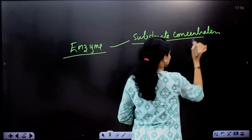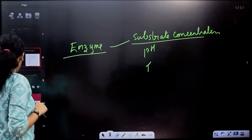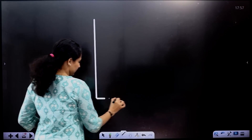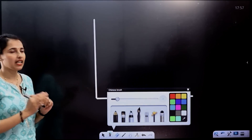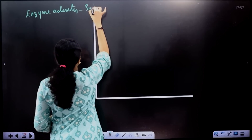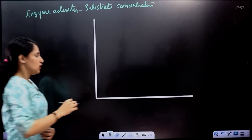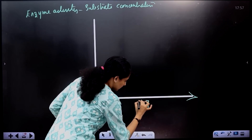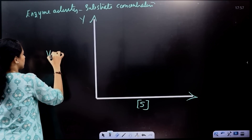We are going to look at how substrate concentration influences enzyme activity. To understand this, we plot a graph. On the x-axis, we take substrate concentration, and on the y-axis, we take the velocity of enzyme action. We plot numbers 1 through 10 on the x-axis for substrate concentration, and values such as 5, 10, 15, 20, 25, 35 on the y-axis for velocity.